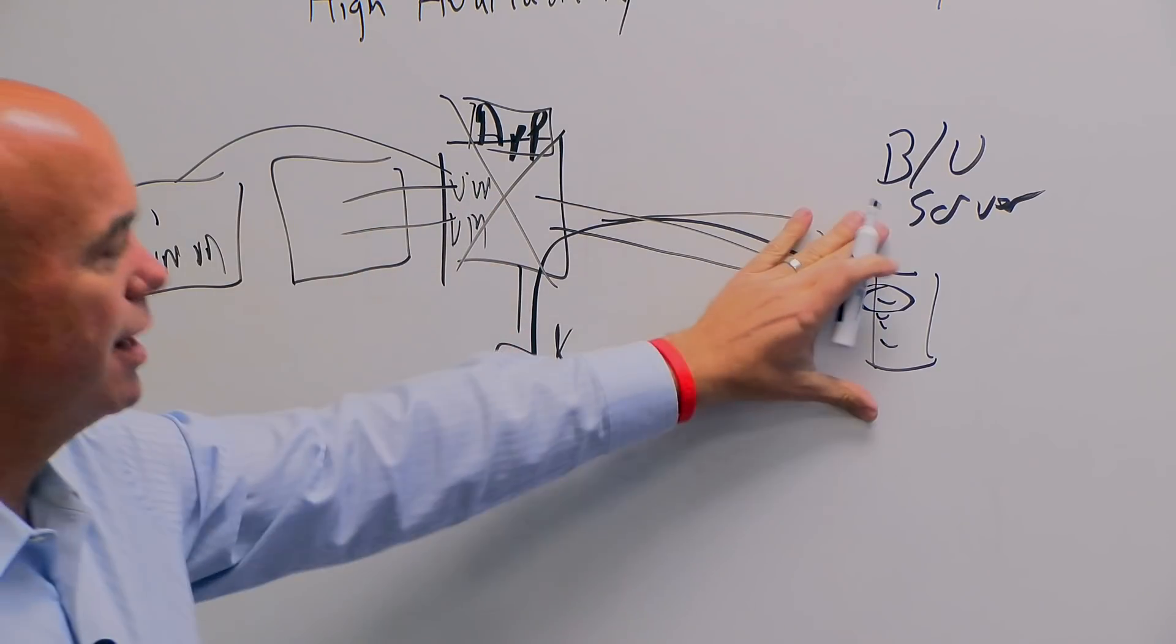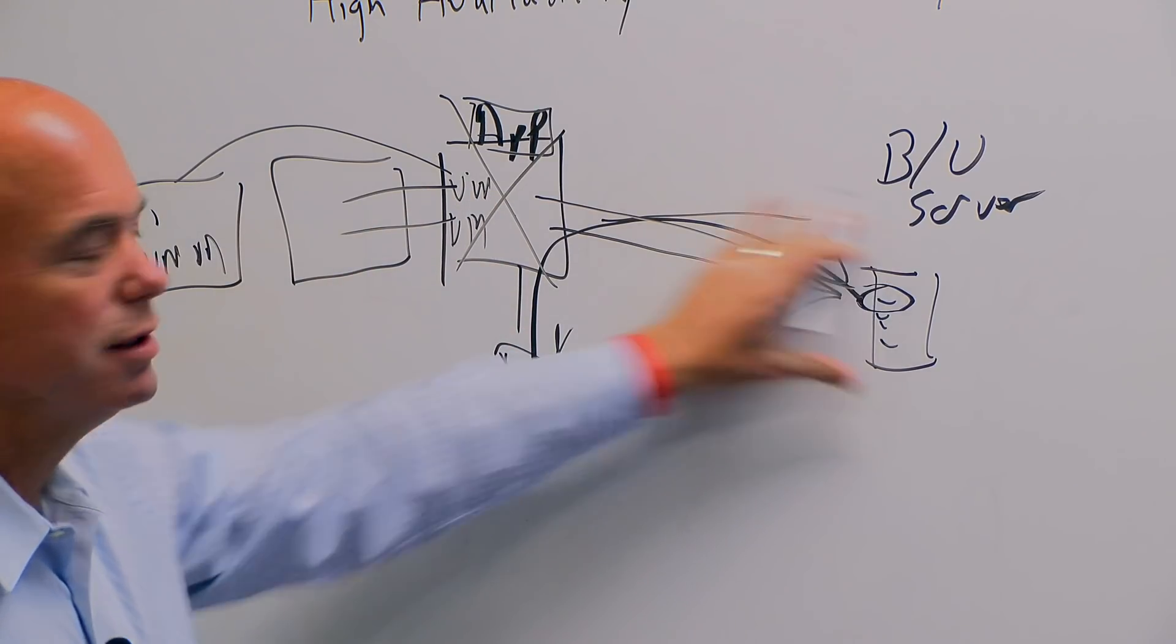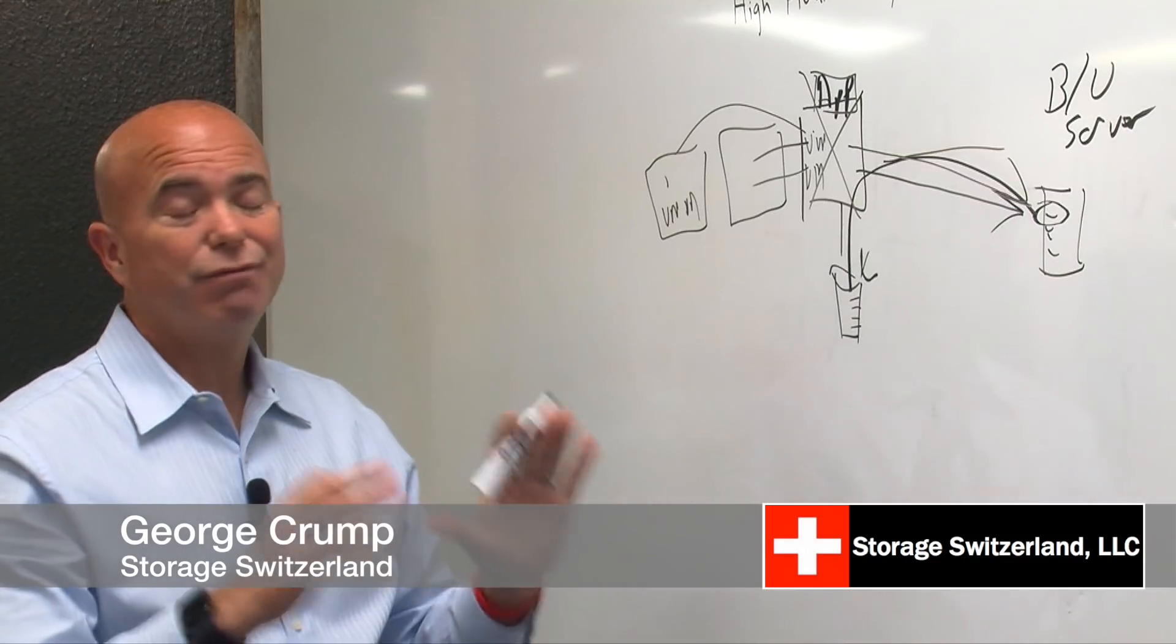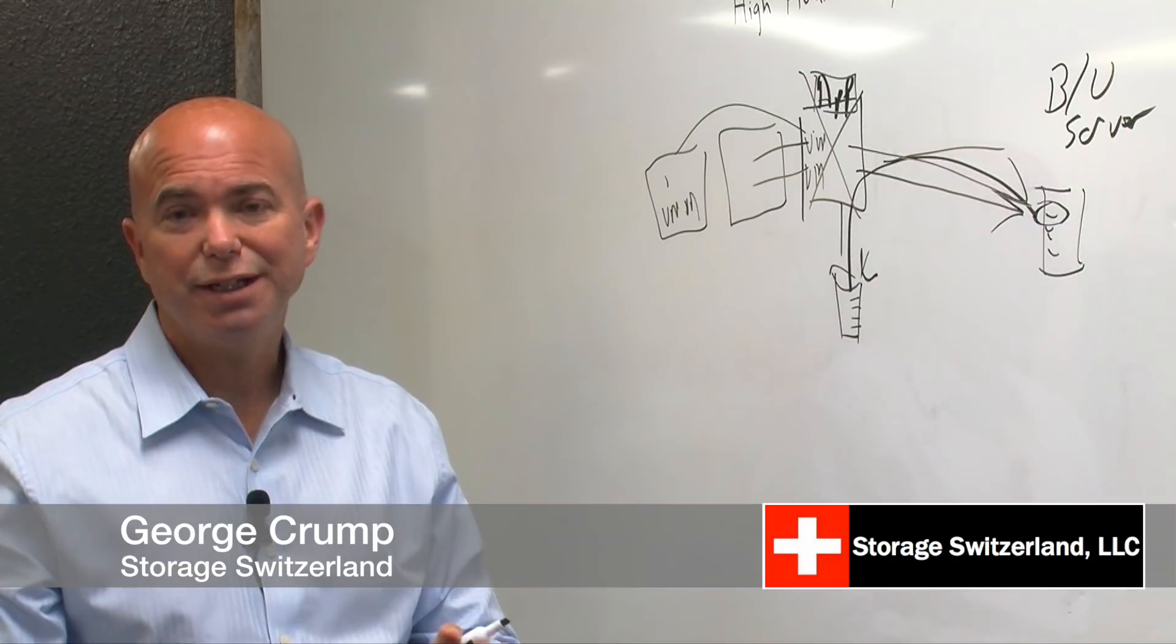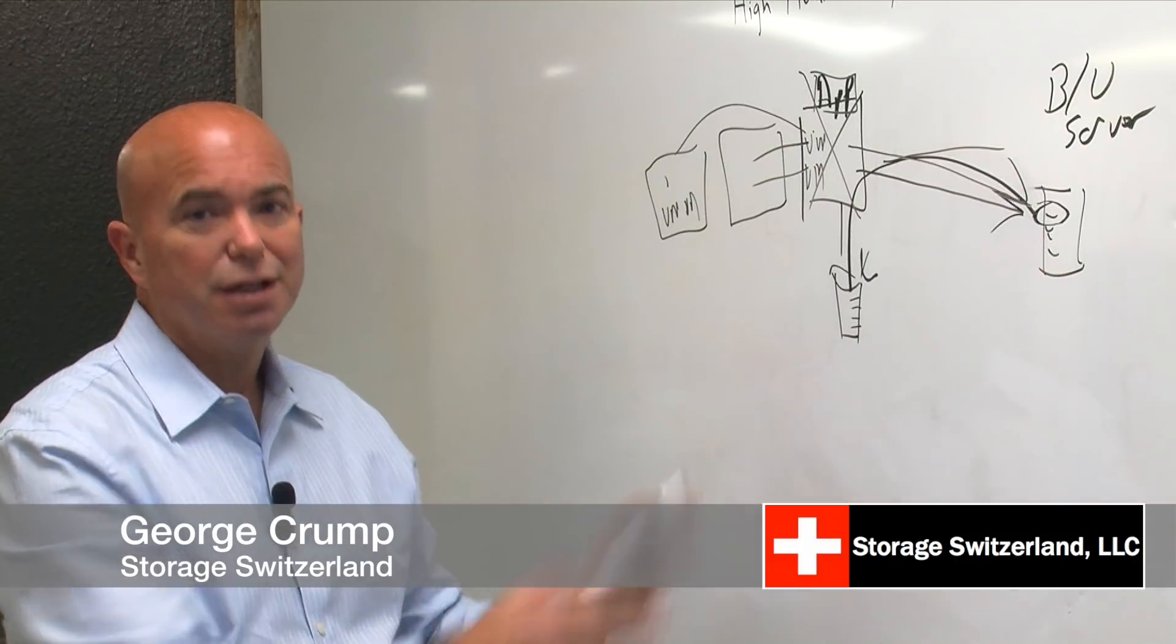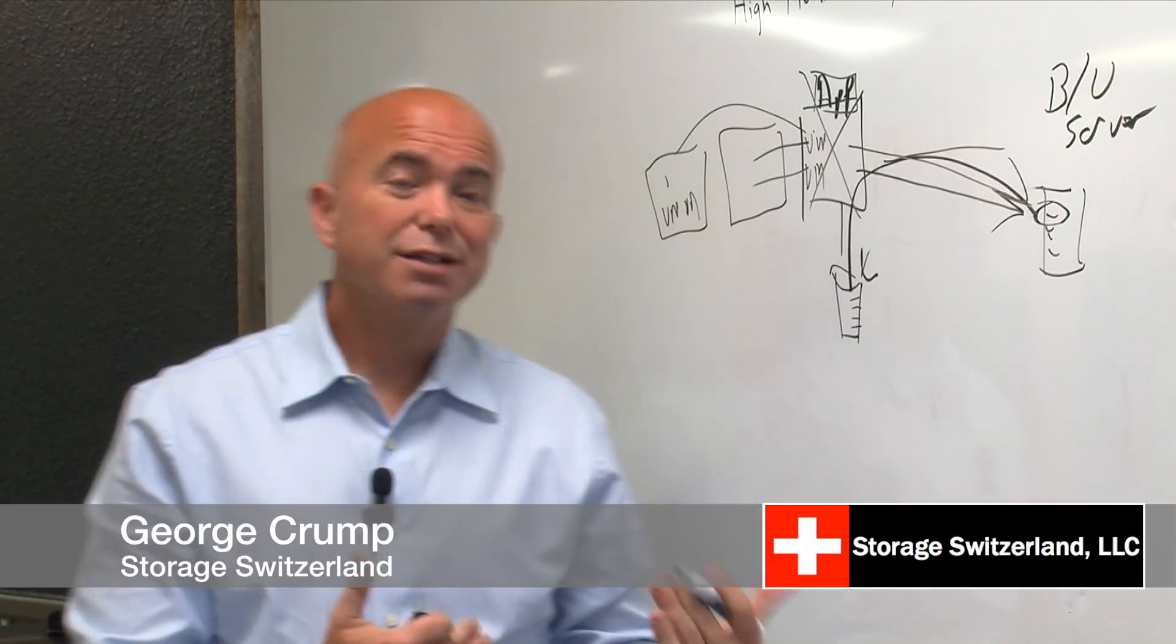If I have a storage failure, then I can instantiate the volume over here and point those VMs there. So what happens is you can get very close to high availability for a lot less money and a lot greater simplicity. So that's a real option to consider.